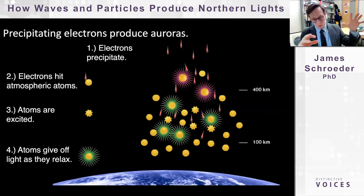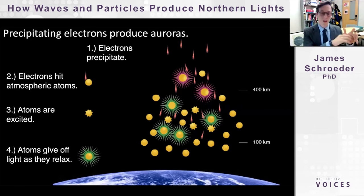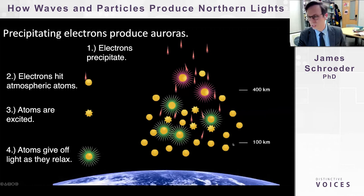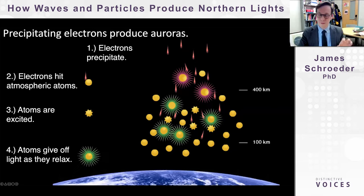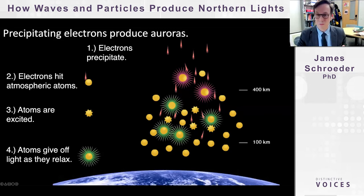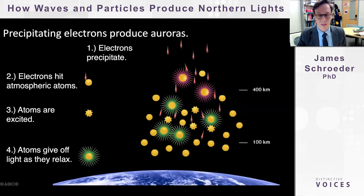An atom in an excited state eventually relaxes to a lower energy level, giving off that extra energy in the form of light — a photon is produced. One electron interacting with one atom produces one photon, imperceptible to human eyes. But a large number of electrons raining down and interacting with many atoms produces an array of photons — that's what makes up the Northern Lights. The process starts at the sun, 150 million kilometers away, but the aurora itself is produced only 100 to 400 kilometers overhead.